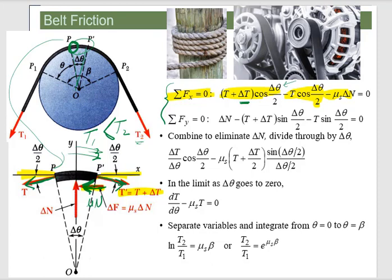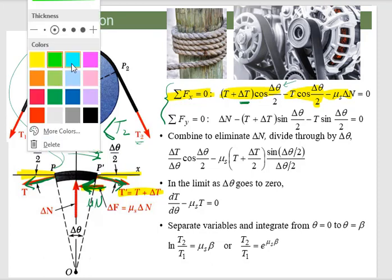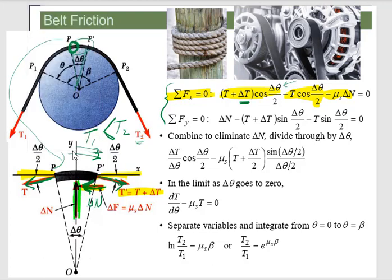Then looking at forces in the Y direction on this thing. So we've got the normal force acting in the Y direction. And then that's going to be the sine piece of those tensions. And we're going to look at just, so here's the angle we're looking at. And if you see the triangles, we've got theta over 2 on each side of it.